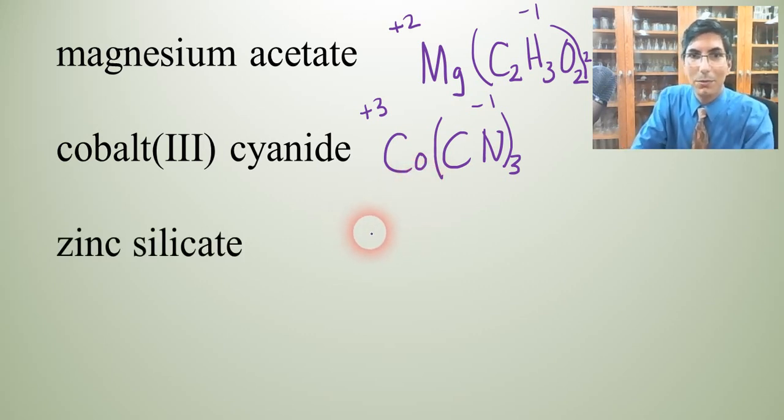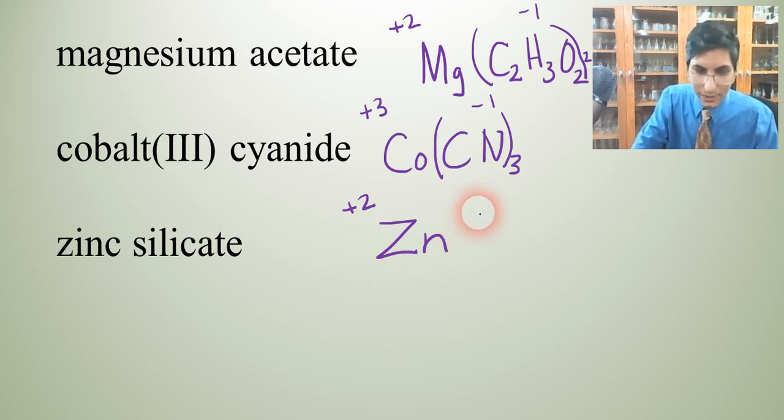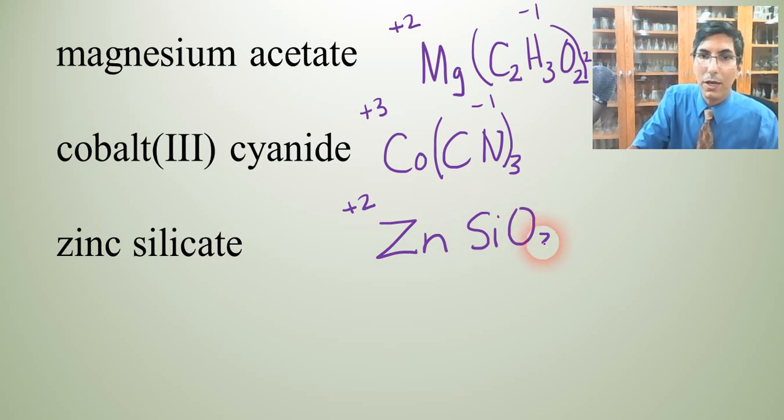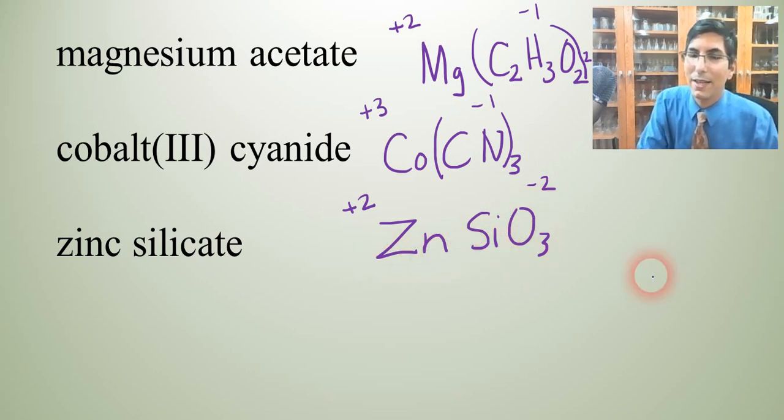Zinc silicate. We don't use silicate too often, but we can find it on the ion chart there. Zinc is Zn with a plus 2. Silicate, if we look at the ion chart, is SiO3 with a negative 2 charge. And we don't have to swap those since they cancel out. So it's just ZnSiO3.